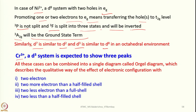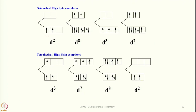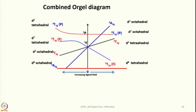Chromium(3+), a D3 system, is expected to show three peaks. All these cases can be combined into a single diagram — another Orgel diagram — which qualitatively describes the effect of electronic configurations with two electrons, two more than half-filled, two less than full shell, and two less than half-filled. So we can write one more Orgel diagram incorporating D2, D7, D3, and D8 for both octahedral and tetrahedral geometries.